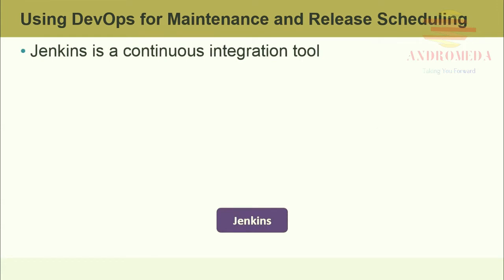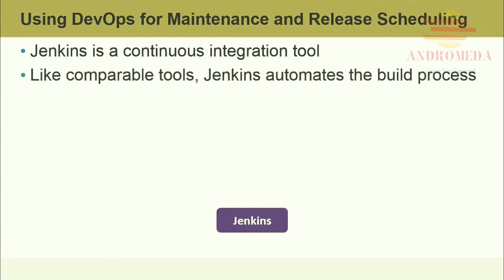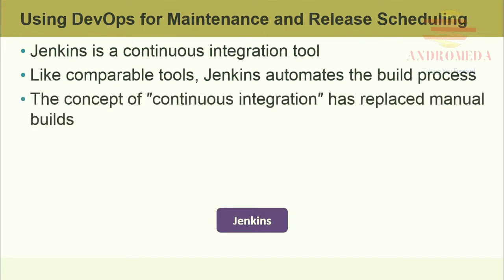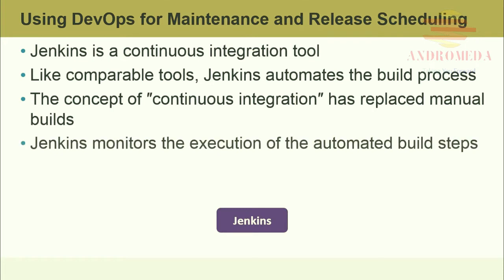Jenkins is a continuous integration tool written in Java. The project is an offshoot of another popular tool, Hudson. Jenkins is free, and plugins allow Jenkins to be run in non-Java environments. Like comparable tools, Jenkins automates the build process. The concept of continuous integration has replaced manual builds. Jenkins monitors the execution of automated build steps. Builds can be scheduled automatically through a commit to source control, or even after another project has been built.